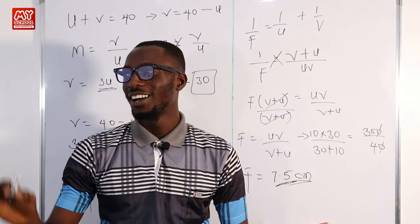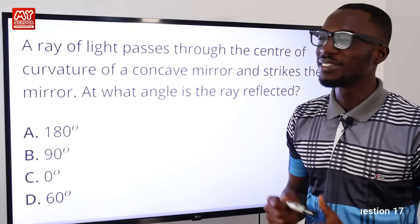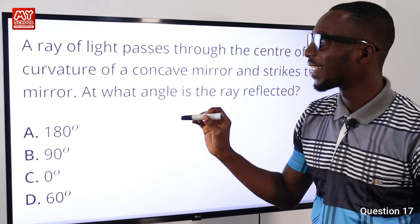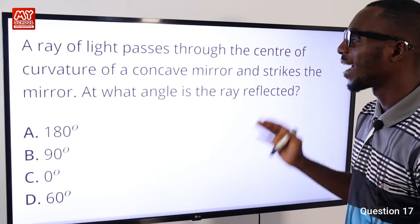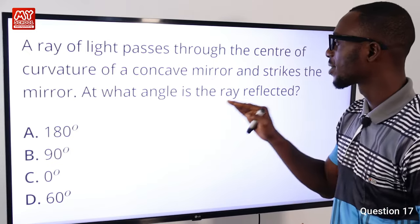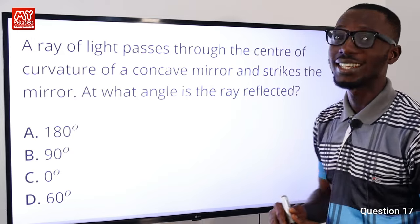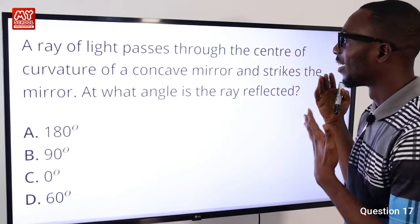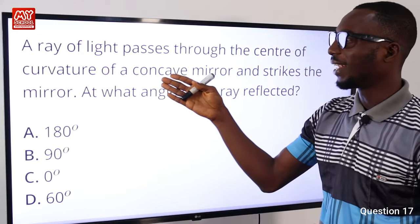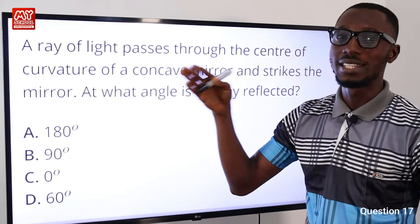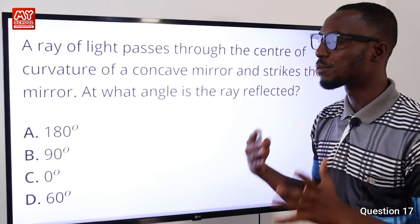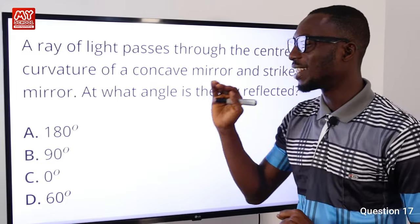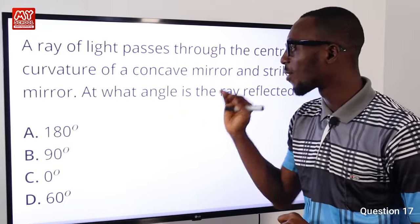Question seventeen: a ray of light passes through the centre of curvature of a concave mirror and strikes the mirror. At the centre of curvature the angle of incidence is zero, so the reflected ray is also at zero degrees — it reflects back along the same path. Option C is correct.